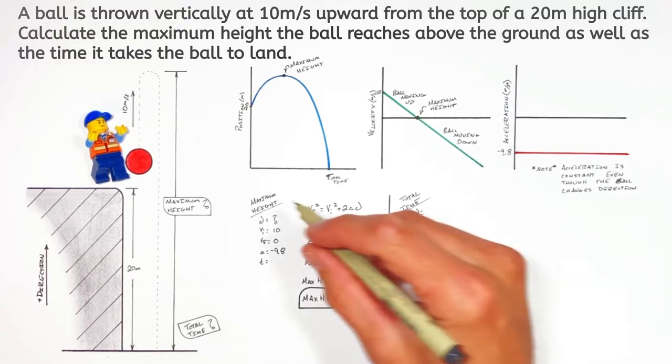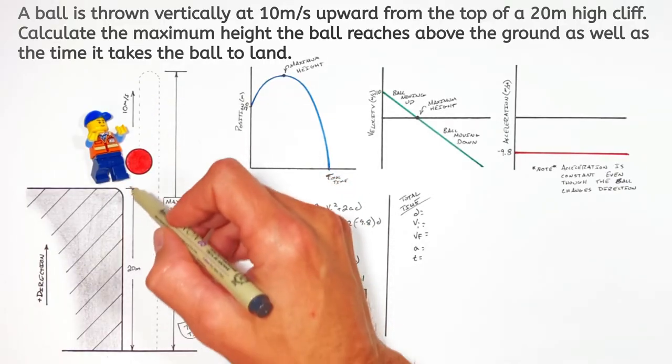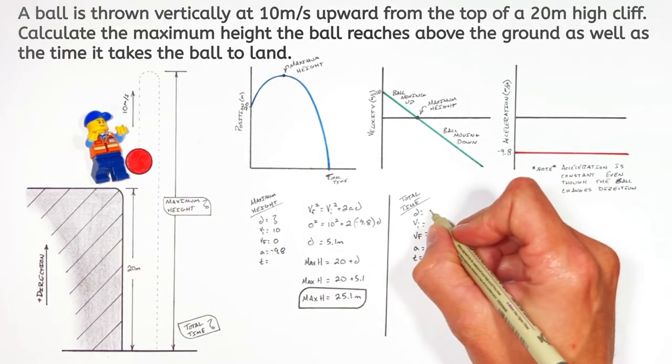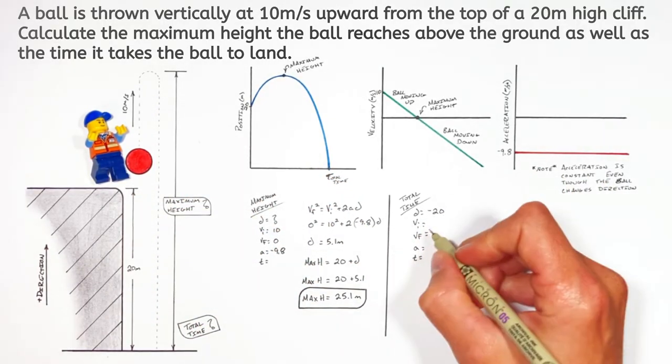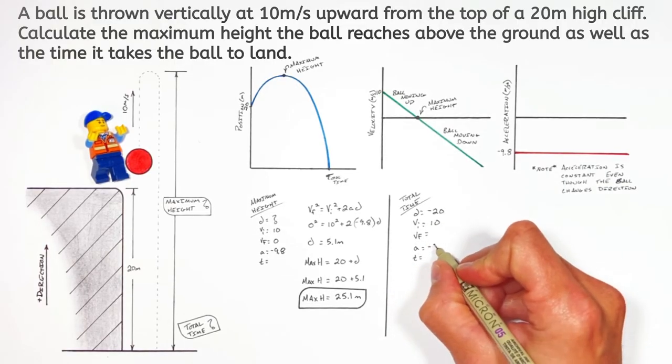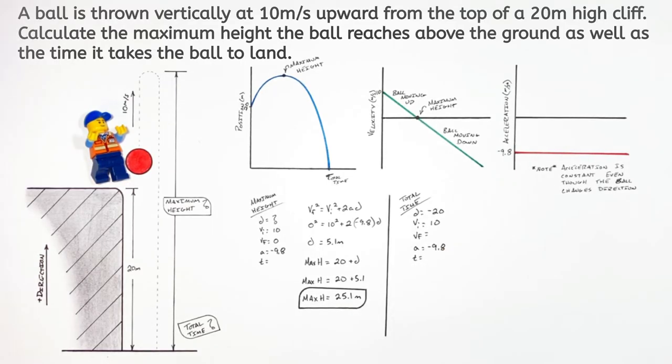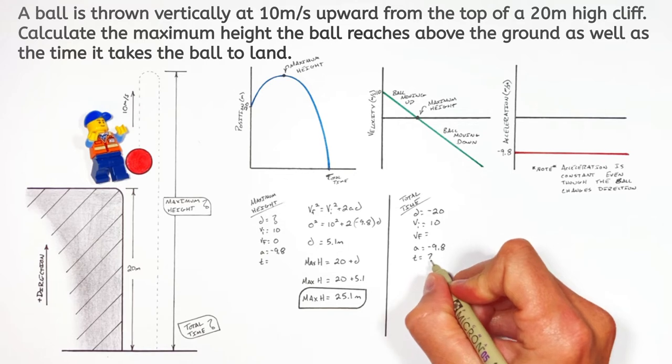Now from start all the way to finish, the ball goes from the top of the cliff to the ground, that's a displacement of negative 20 meters. Now the ball is still thrown up at 10 meters per second. We don't know the final velocity in this case, but we know the acceleration is still going to be negative 9.8 meters per second squared. And we're solving for the time the ball spends in the air.